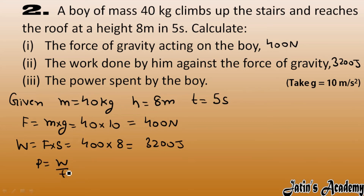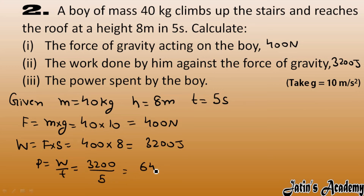Next, power spent by the boy: Power = Work done / time. Work done = 3200 J and time = 5 seconds, so Power = 3200 / 5 = 640 Watt. Power spent by the boy is 640 W.